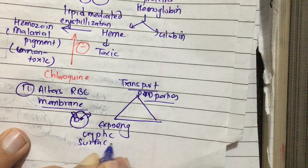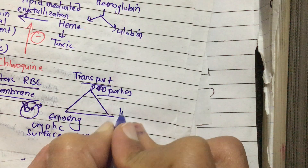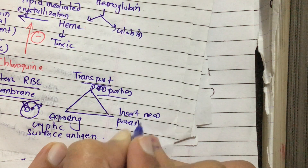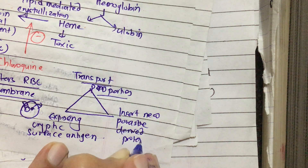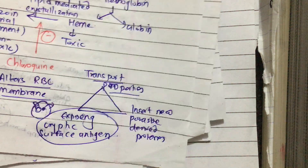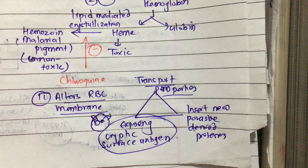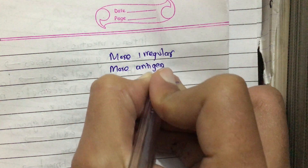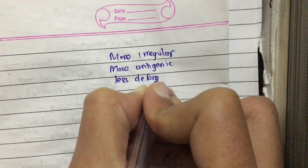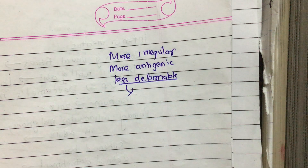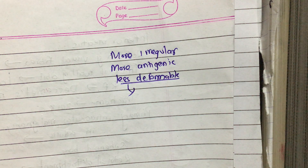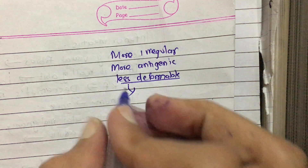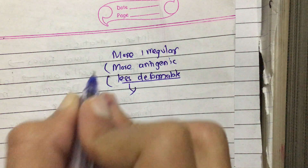Third, new parasite-derived proteins are inserted into the RBC membrane. All of these changes — altered transport properties, exposed cryptic surface antigens, and inserted parasite-derived proteins — lead to an RBC that is more antigenic, more irregular, and less deformable. The reduced deformability is important when the RBC passes through splenic capillaries.